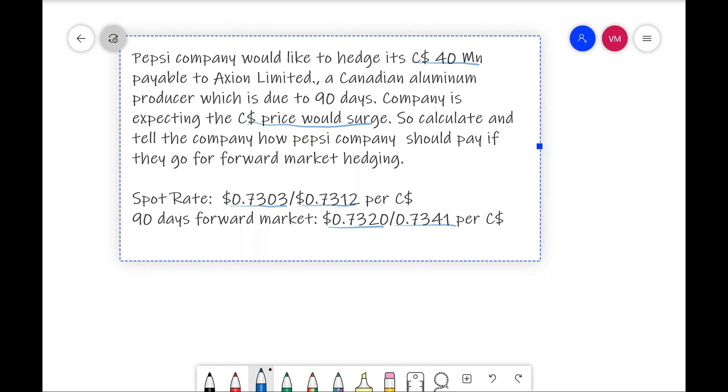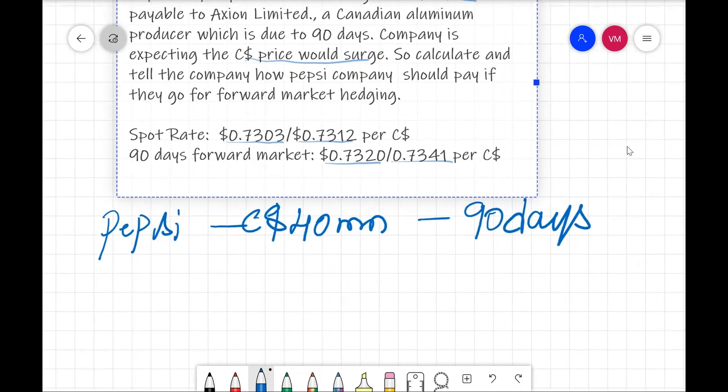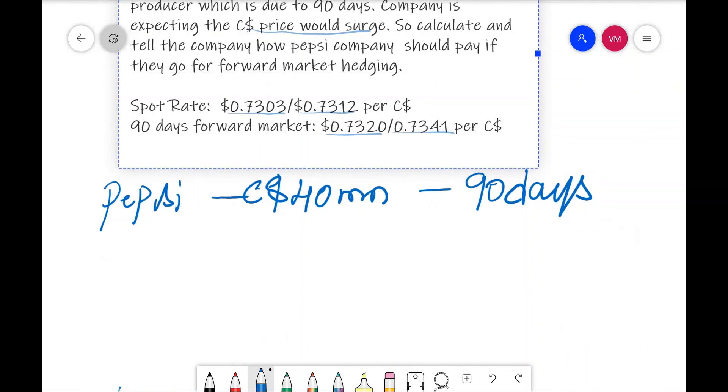Now, in the problem, Pepsi company needs to pay 40 million Canadian dollar after 90 days. Whether I need to pay today or after 90 days, that is after 90 days. So, we need to take the quote of the 90 day forward market. In the 90 days forward market quote, they are given two quotes, that is 0.7320 slash 0.7341, that is per Canadian dollar.